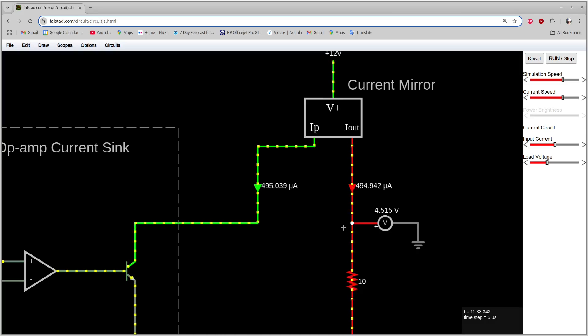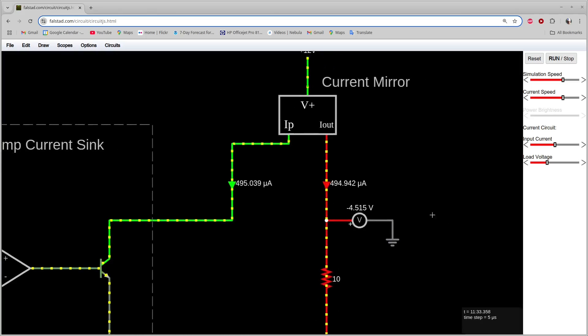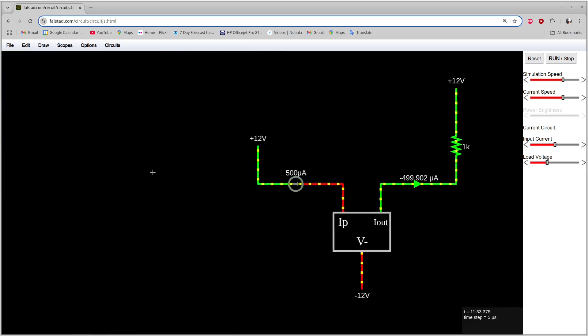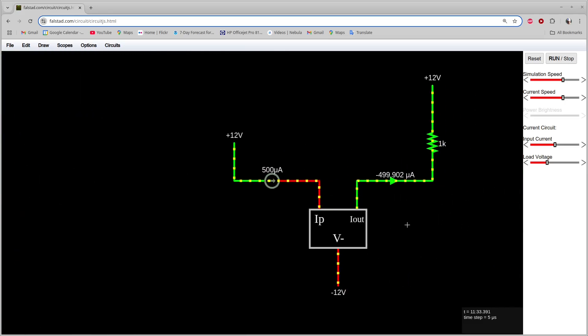I should mention that you can build a mirror with either direction of current flow. One simply uses PNP transistors, while the other uses NPN. So, how do we accomplish this wizardry?